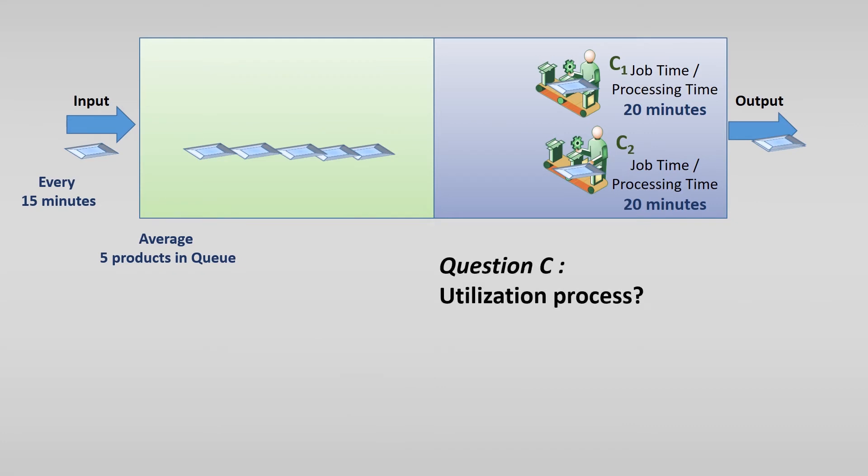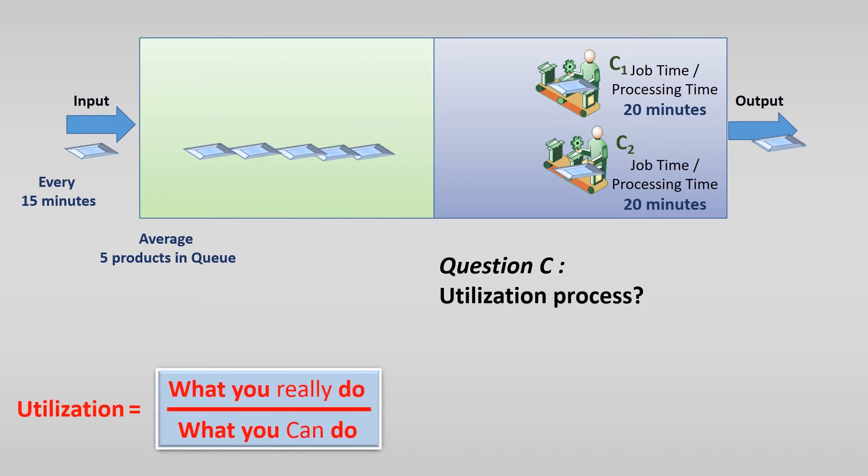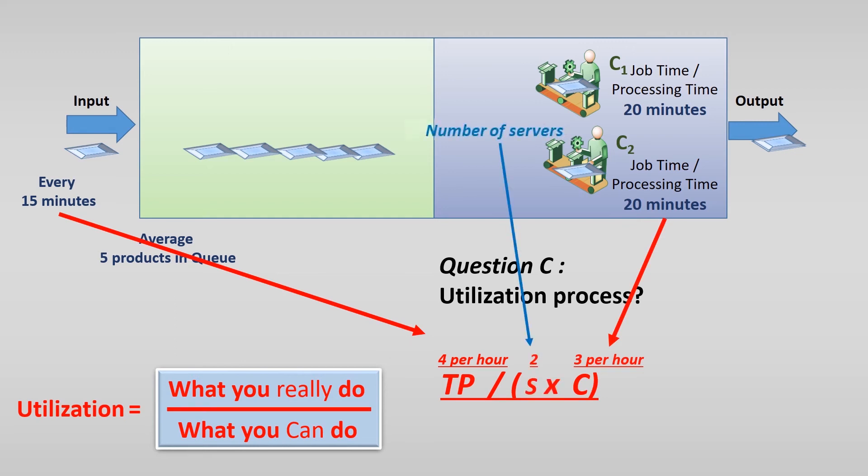The last question we ask is about the utilization of the services. How much of the time are these services really working? We need the time that we are working and relate this to the time that we can work. The time we need to do the work is 4 per hour. What we can do is a little bit more difficult. Every machine takes 20 minutes of processing time, so 3 products per hour per machine. As we have 2 services or machines, we can service 6 products per hour in total. The utilization in this case is 67%, so 67% of the time the services are working on a job.